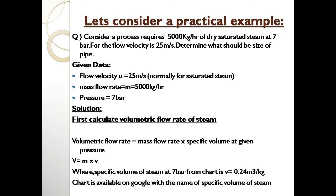The given data: flow velocity = 25 m/s, mass flow rate = 5000 kg/hr, steam pressure = 7 bar. Moving to the solution, we first need to calculate the volumetric flow rate of steam, since we have mass flow rate, not volumetric flow rate. Volumetric flow rate equals mass flow rate multiplied by specific volume at the given pressure.